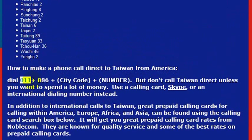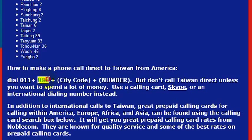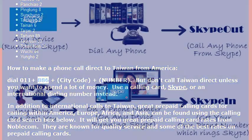If you're calling from a landline, you would dial 011, and then the country code for Taiwan, which is 886, and then the phone number you're trying to reach. So the country code for Taiwan is 886.